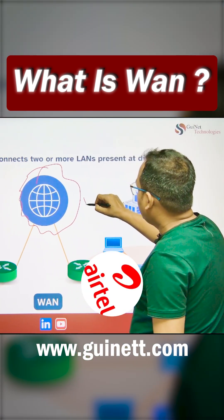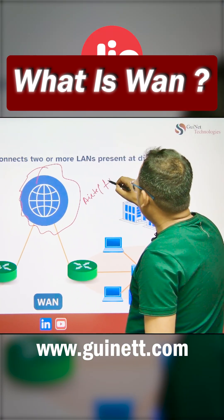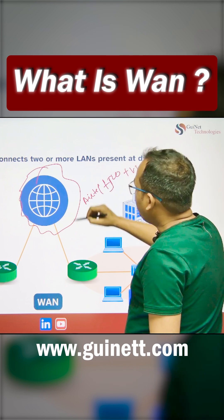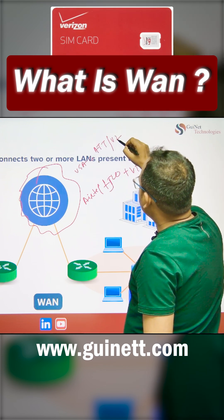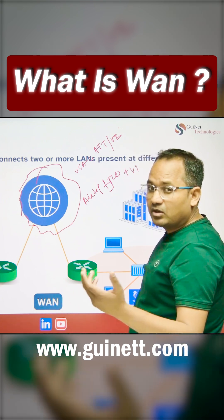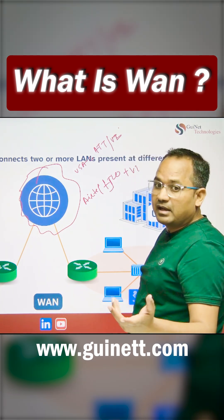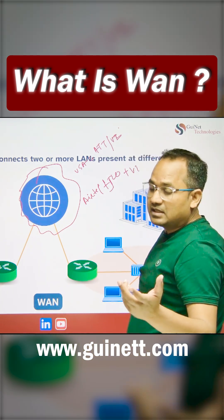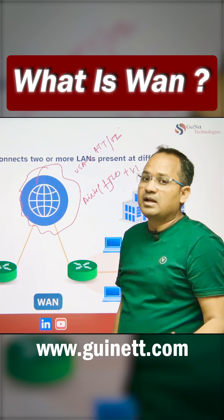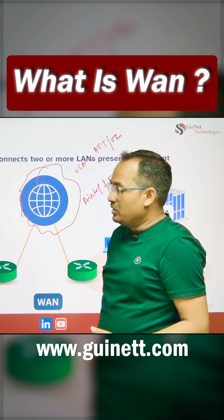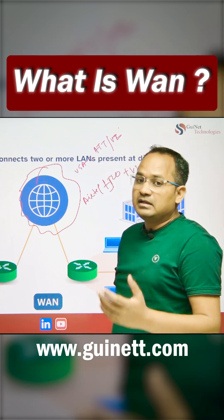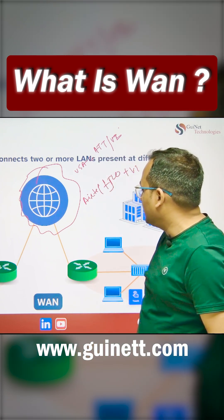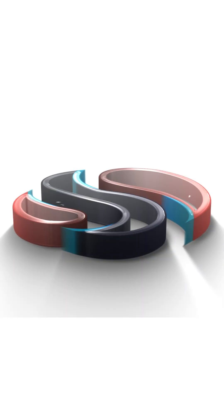WANs are basically your ISPs. If you're in India it could be Airtel, Jio, or Vodafone Idea. If you're in the USA you're going to find AT&T, Verizon, or Telestra. In Canada there's Bell Canada, and in the UAE there's Etisalat. There are a lot of ISP vendors available. Basically, a WAN provides connectivity across different locations, and if you need internet connectivity that is made through the ISP.